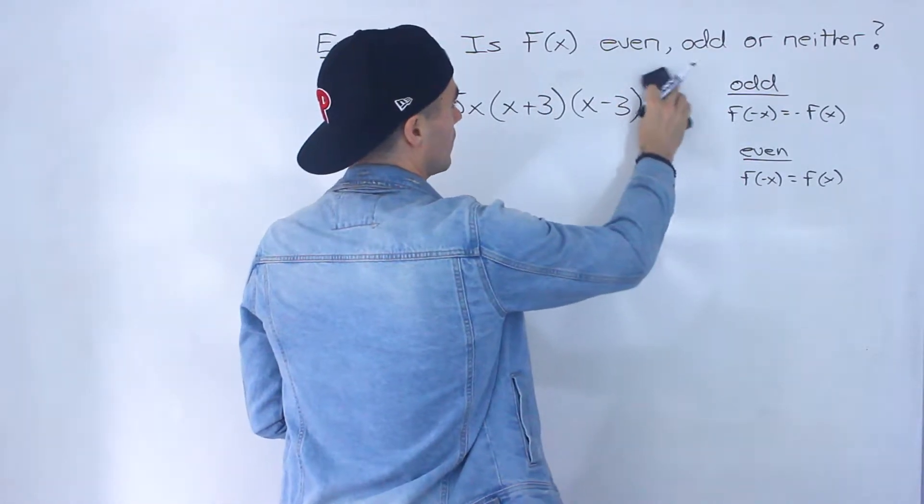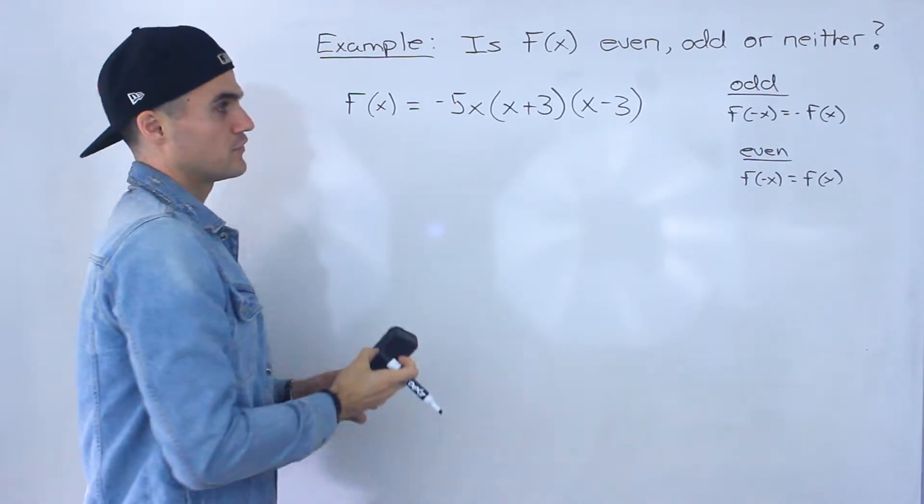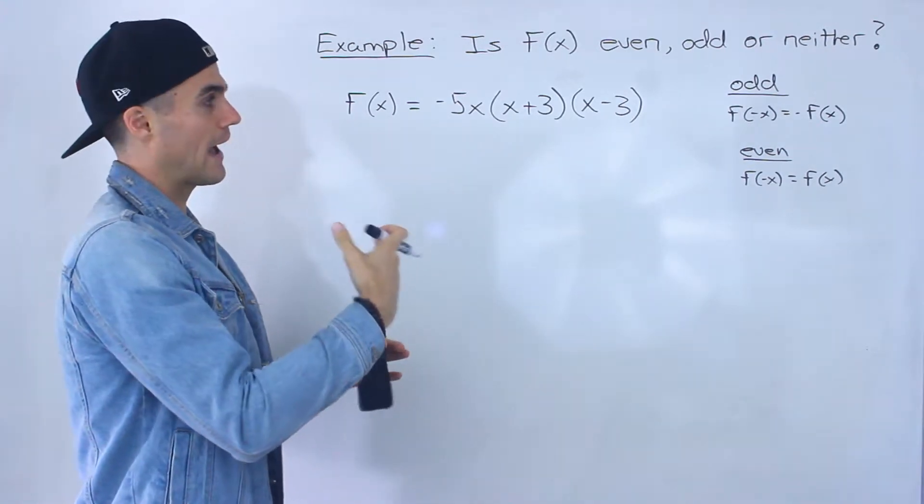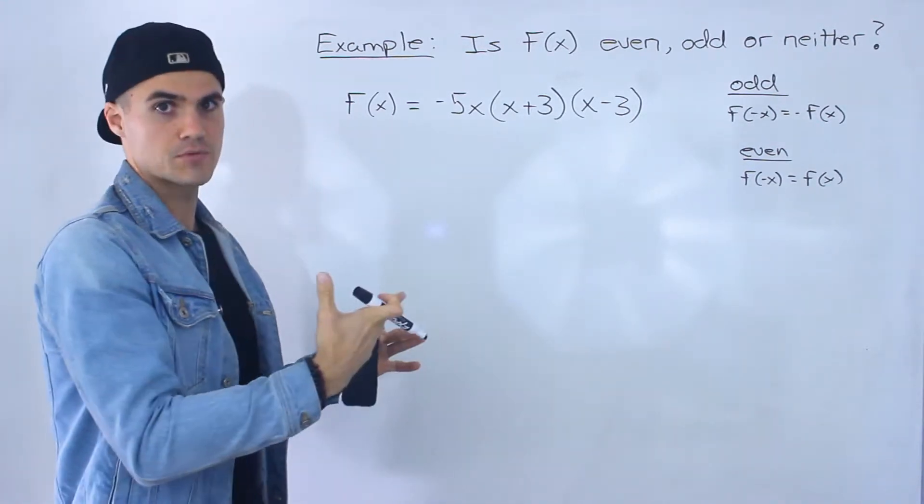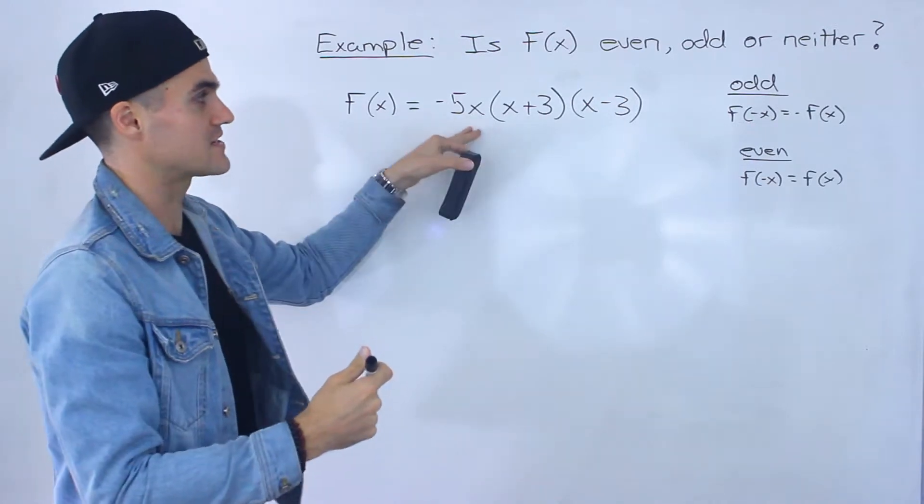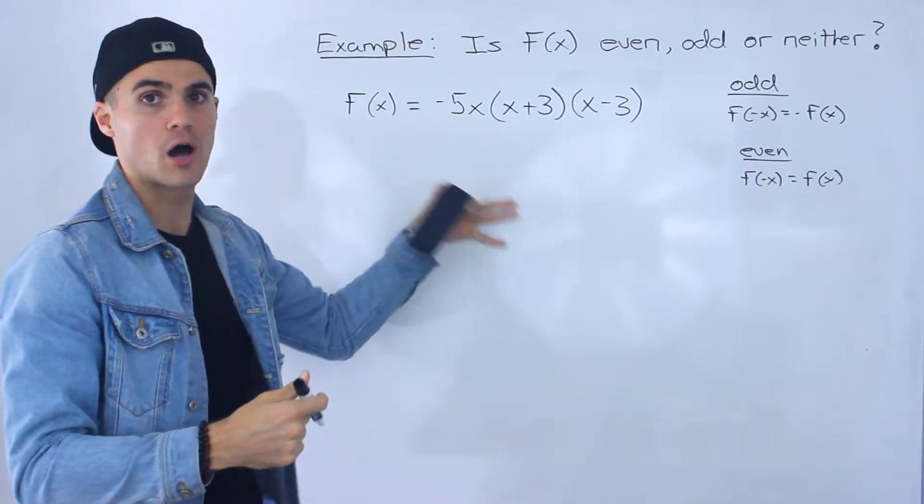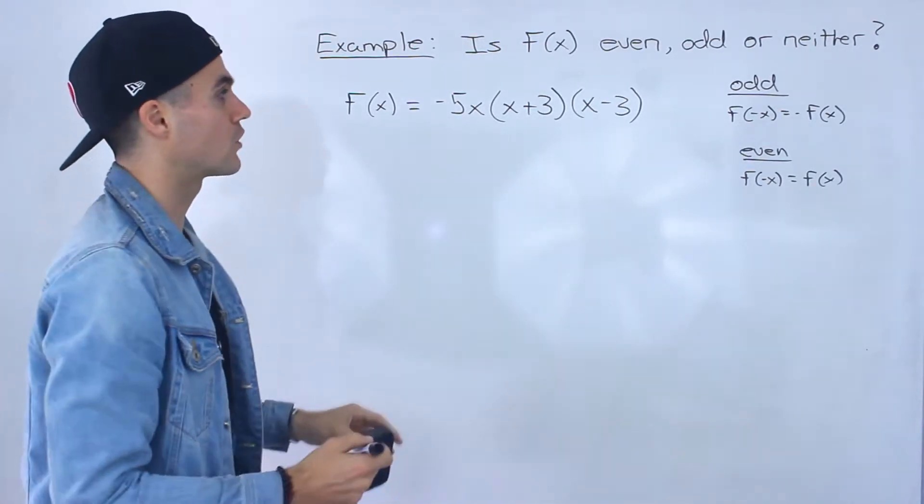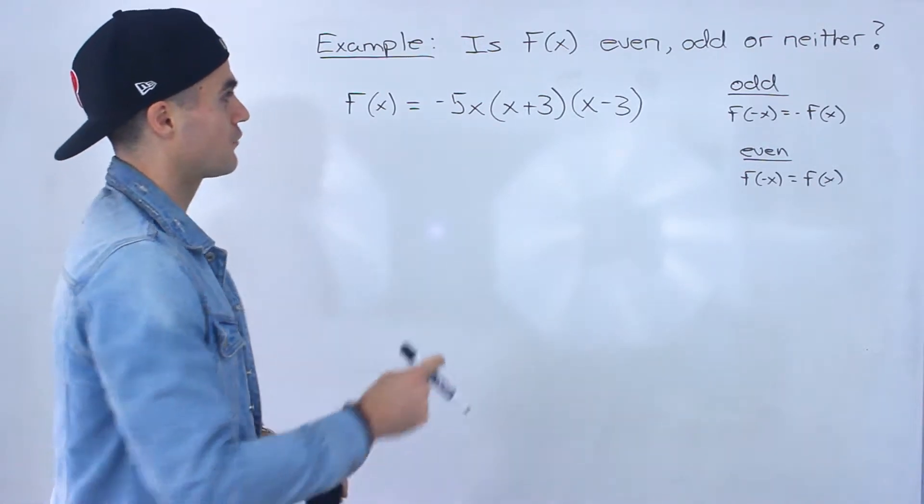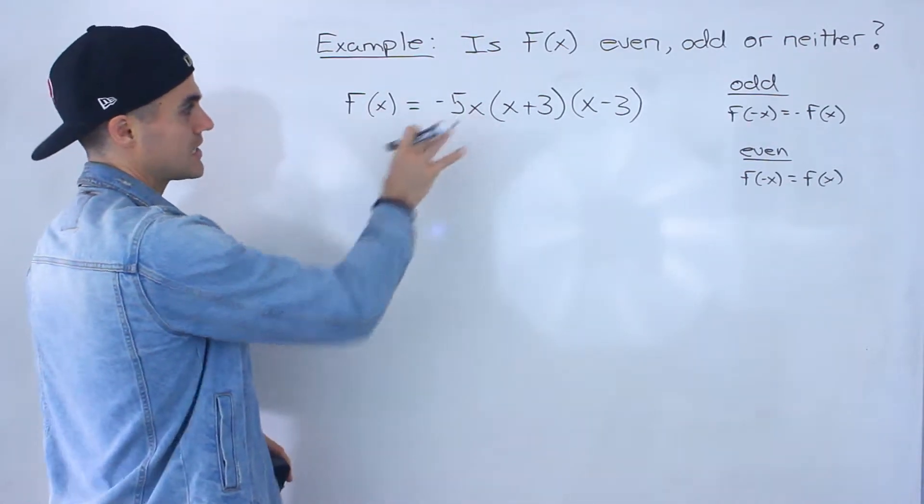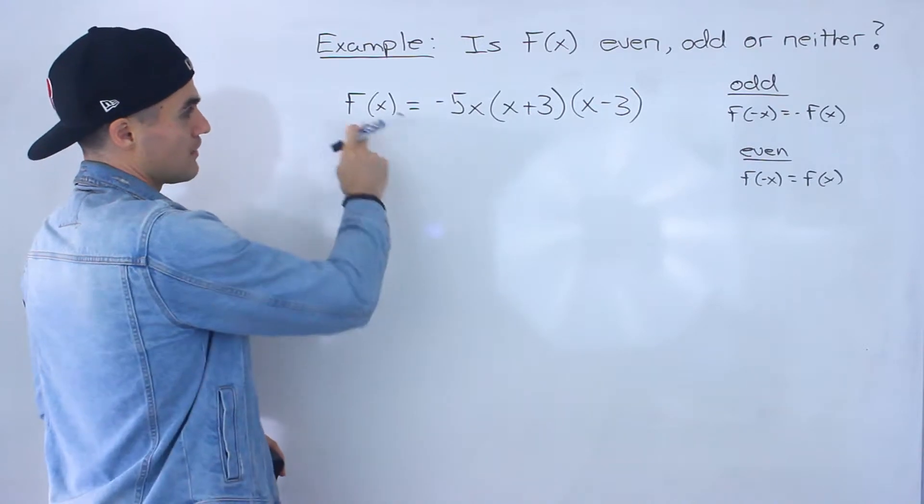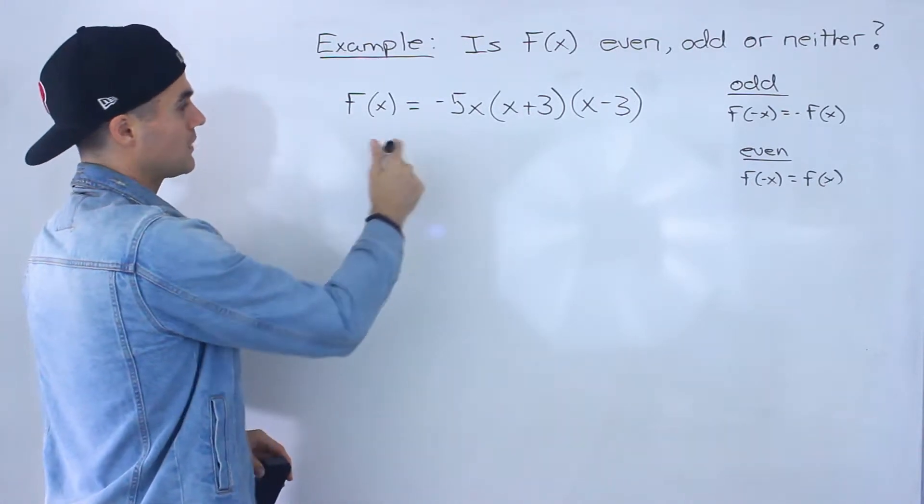What we're going to be doing in the next couple of videos, starting with this one, is showing you how to find the symmetry of a function when it's in this factored form, and even in more complex factored forms as we'll go over in future videos. But for now let's just work with this one and keep it in this format. So this is f of x here.